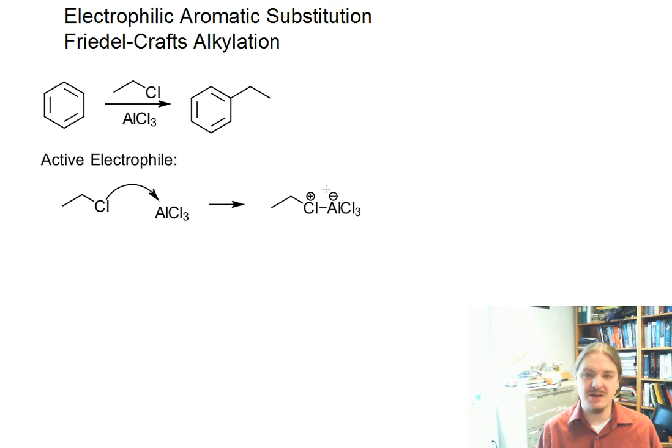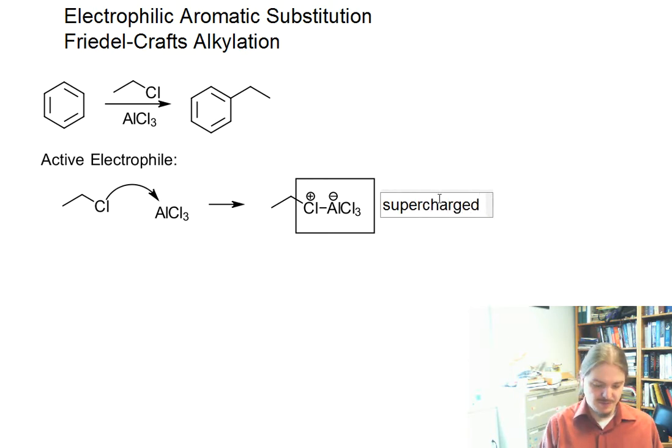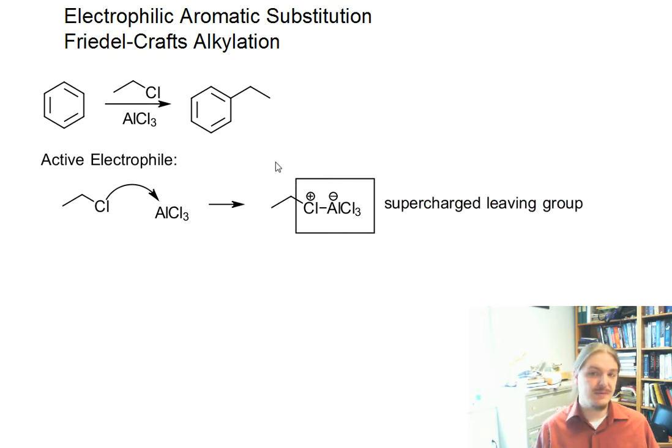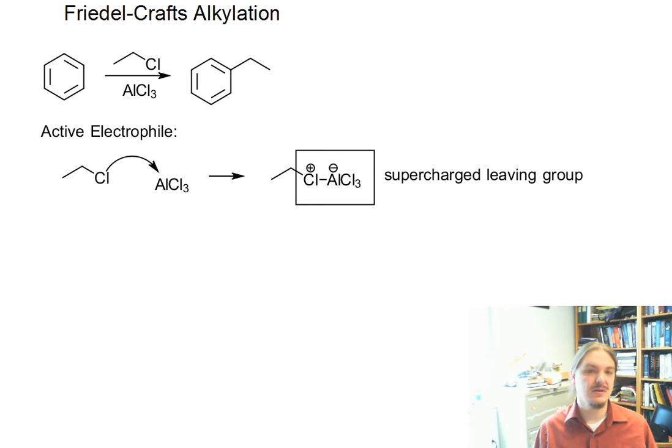And what we have done, in effect, as many of these reactions do, we don't just have a good leaving group, we have some sort of supercharged leaving group. So just like protonating an alcohol makes it a better leaving group, taking a chlorine, which is a good leaving group, and making it positively charged makes it a super leaving group.